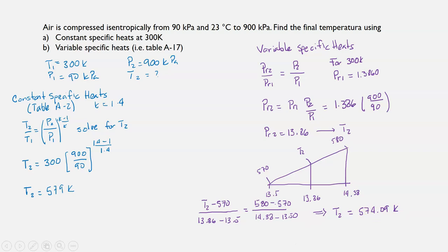As you can see there is a difference between 579 and 574, and this difference is due to the variation of specific heats with temperature.